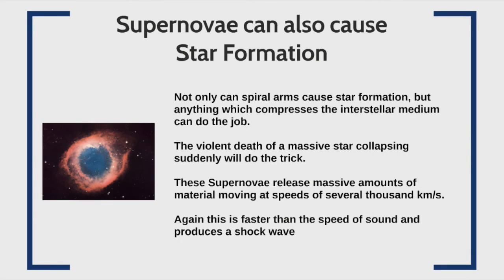Another event that can trigger star formation is a supernova, which we'll study in a couple of chapters. Supernovae occur at the end of a star's life — a very massive star dies a violent death, literally exploding and producing massive amounts of material moving at several thousand kilometers per second. This material reaches the vicinity of a molecular cloud or giant molecular cloud, causing compression and further star formation.